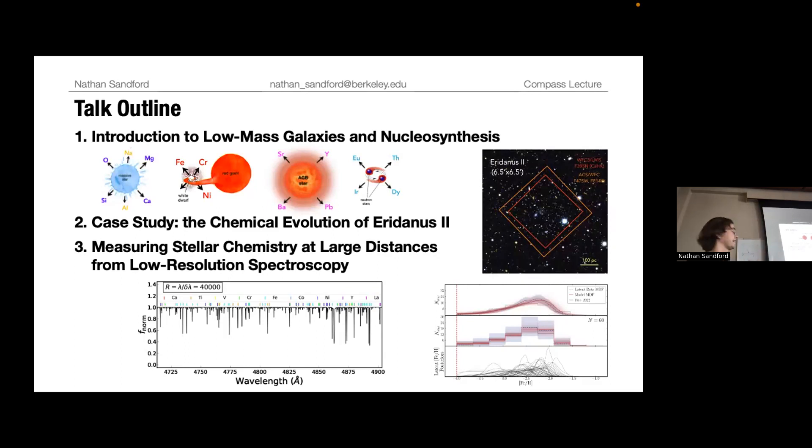I want to start by giving a good, solid foundation in low-mass galaxies and why these are especially interesting astrophysical systems to study, especially their chemical evolution and what that can tell us about the underlying physics of galaxy formation. Then I'll move to talk about a specific study I performed recently on the chemical evolution of Eridanus II, which is a very low-mass galaxy around the Milky Way.